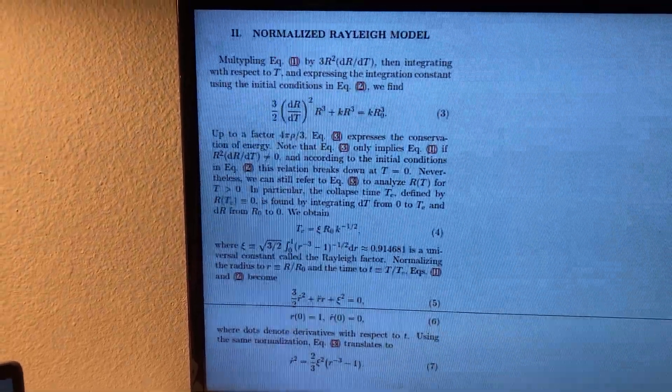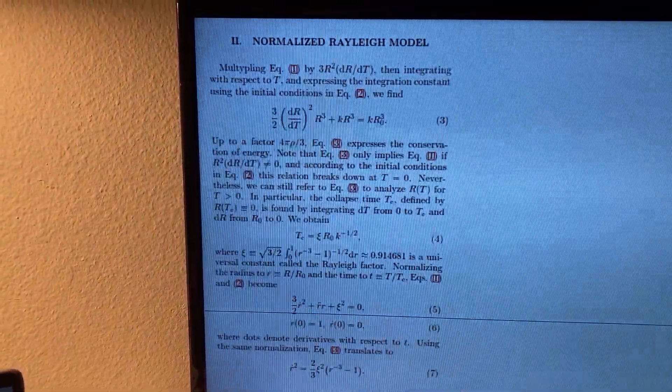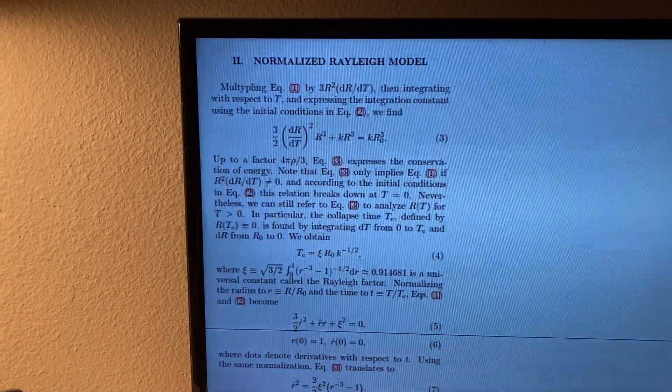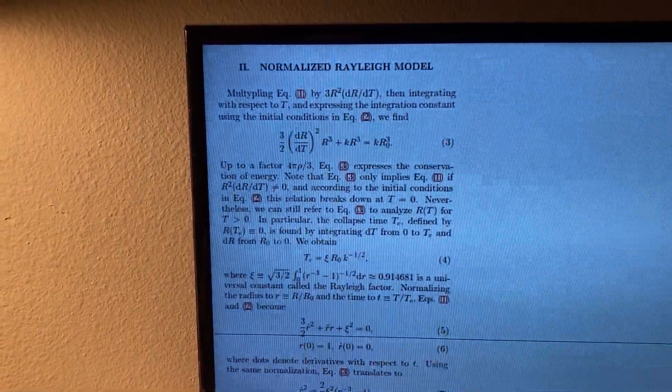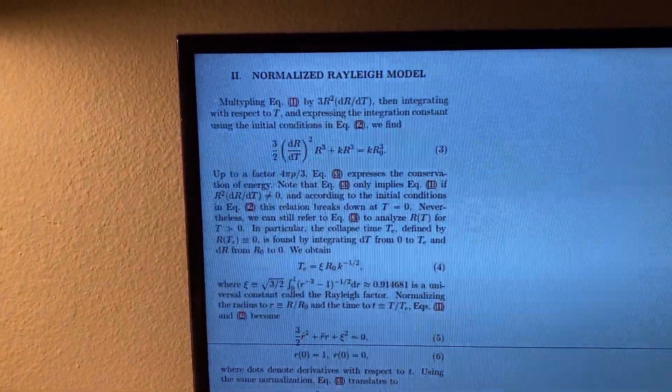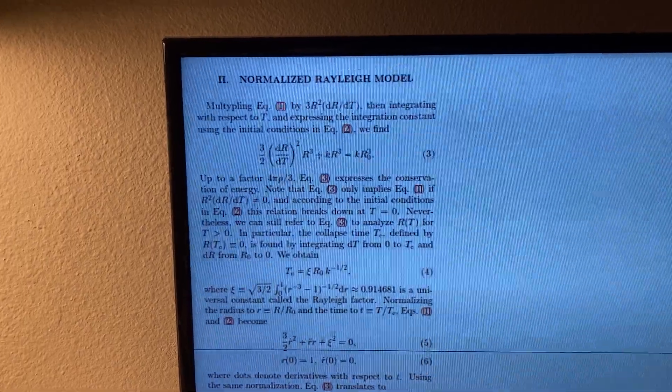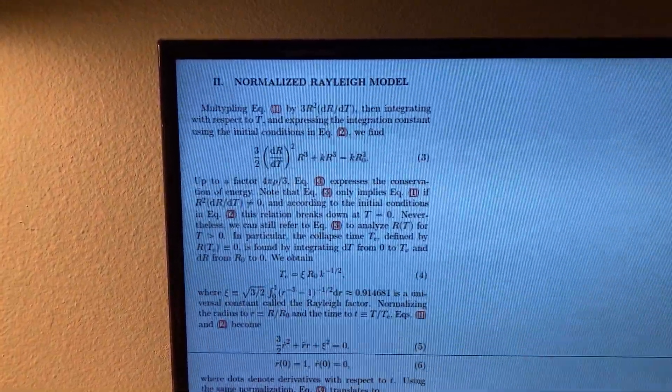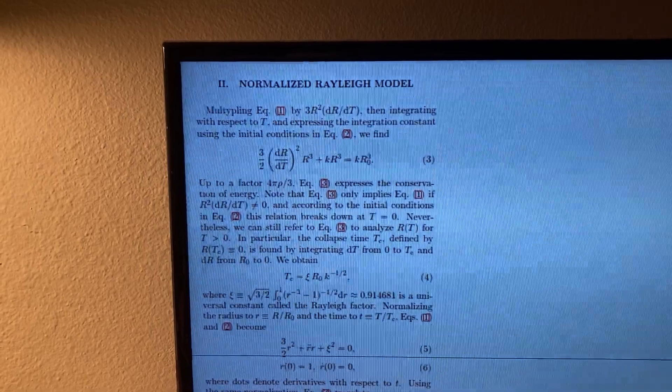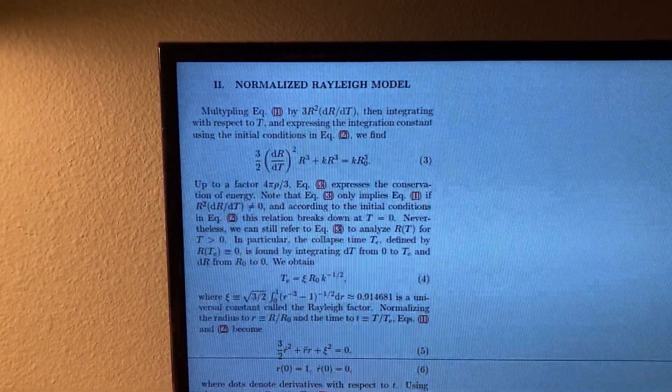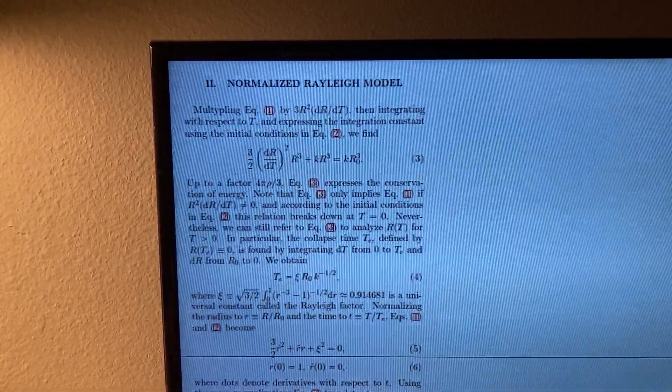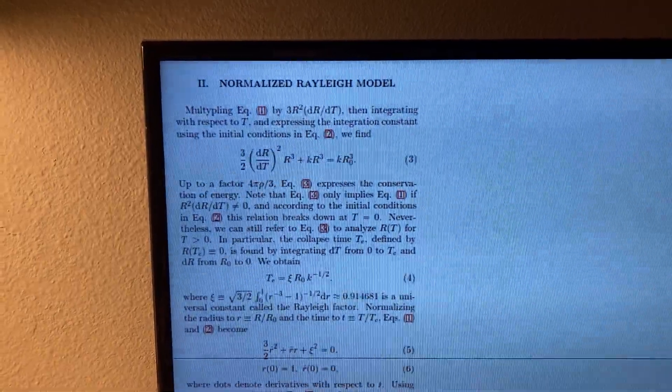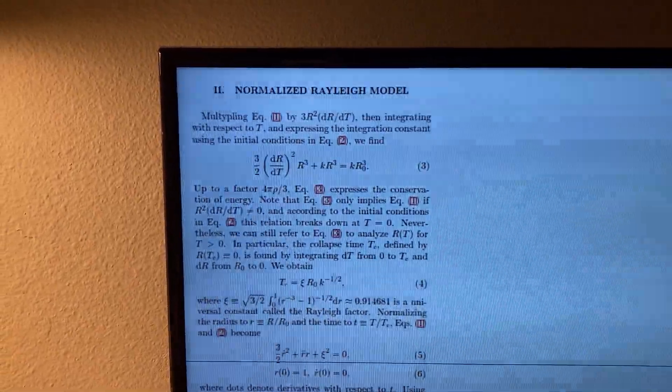To make the equation cleaner, he normalized the radius variable as a percentage of the initial radius and normalized the time variable as a percentage of the time it takes for the bubble to collapse. It's similar to saying 50% of the race completed instead of 13.1 miles of the marathon completed. This way, the equation will be true regardless of whatever particular values the radius and collapse time take on.